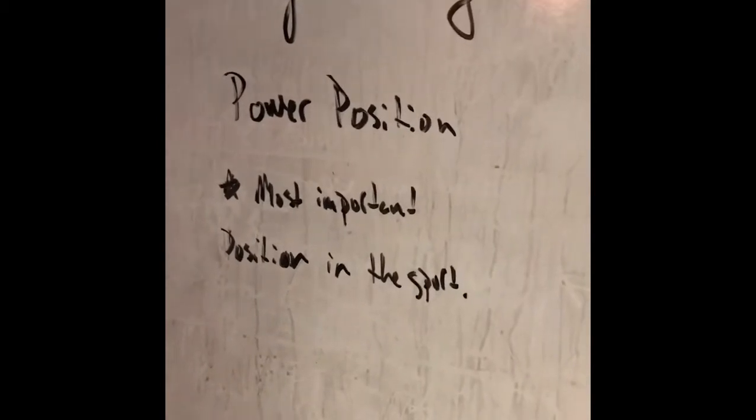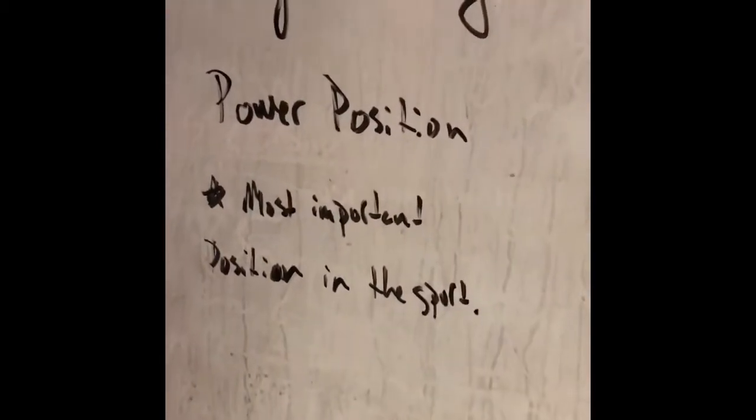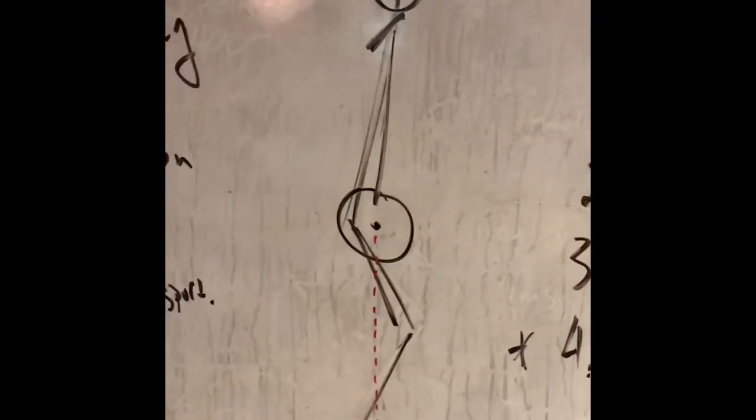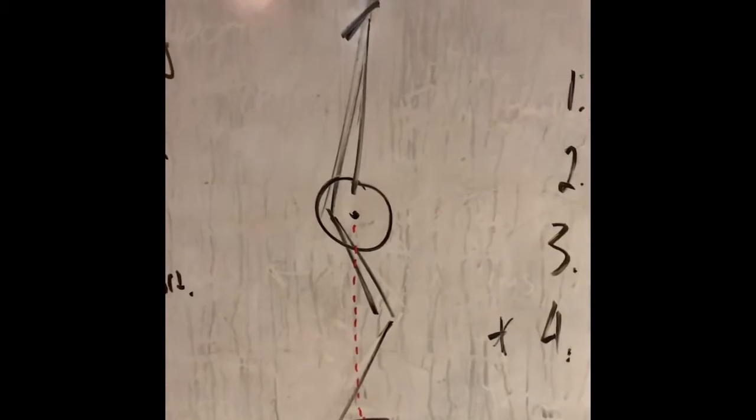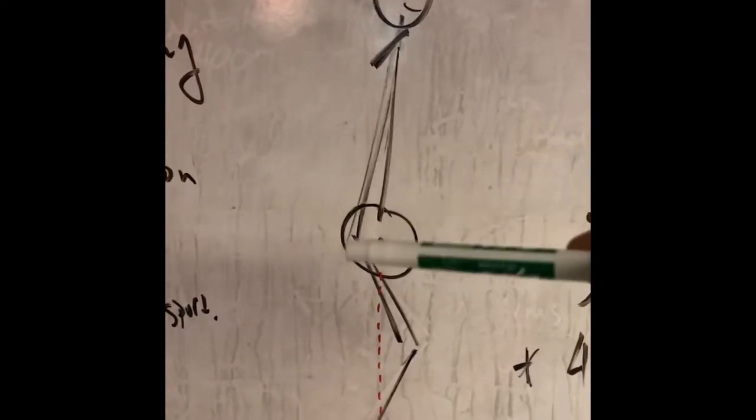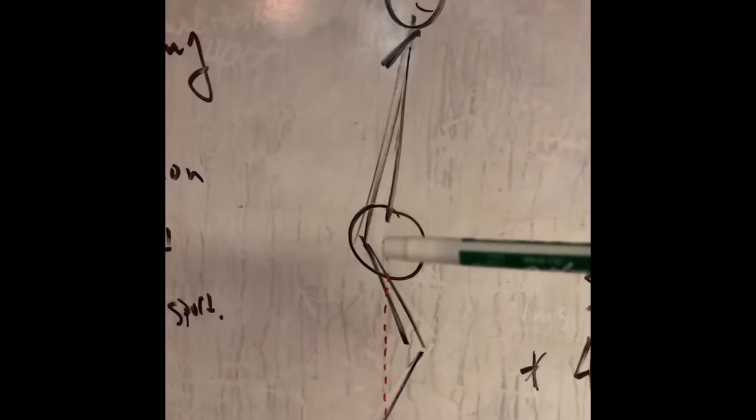Talking weightlifting today guys, power position. It's the most important position in the sport of weightlifting. A little demo graph over here. I'm not an artist. This is a person, this is their face, this is the shoulder blade. Arm comes down, there's the bar in the hip, down to the knee, and then the foot where the barbell